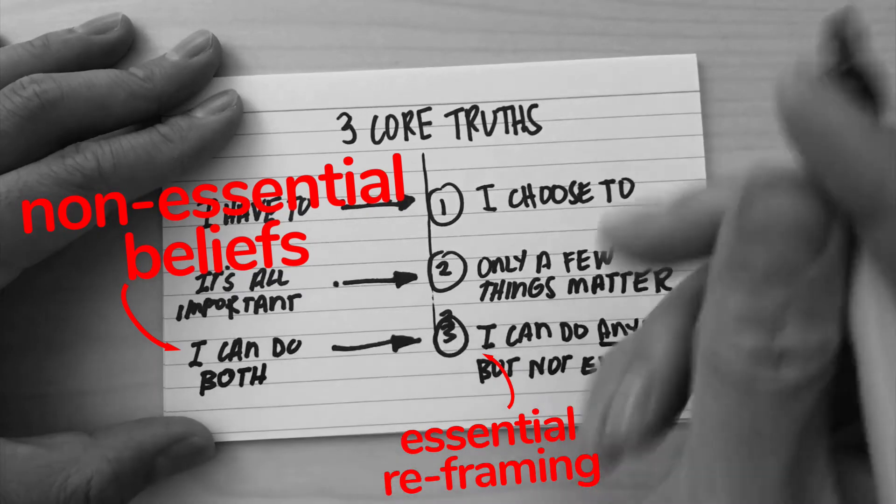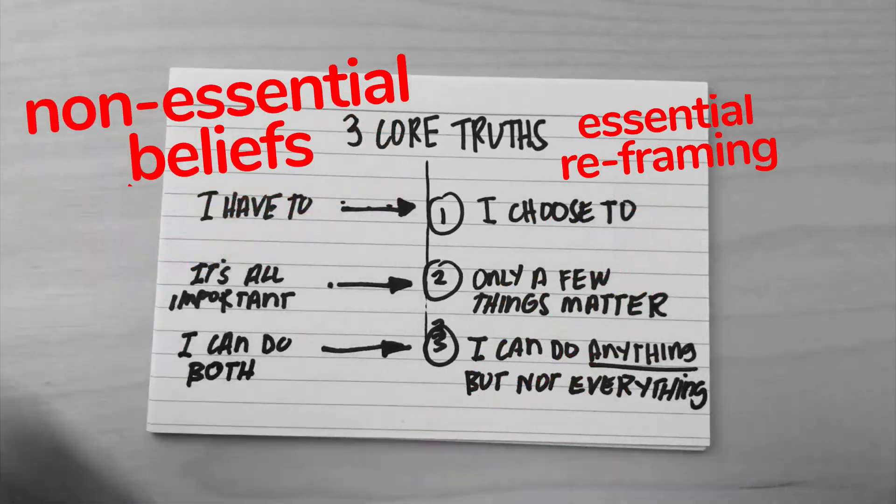You can probably succeed in any single one of them if you apply the right focus to it. But if you are splitting your attention between five different things—there's that idea: if you could take one step each day, do you want to split that up over the week going in seven different directions?